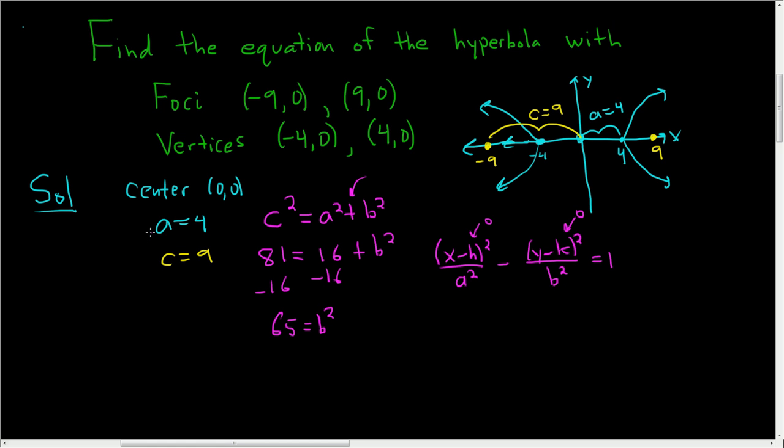a was 4, so a squared is 16. So we end up with x squared over 16 minus y squared over 65. And this is equal to 1. And that is the final answer.